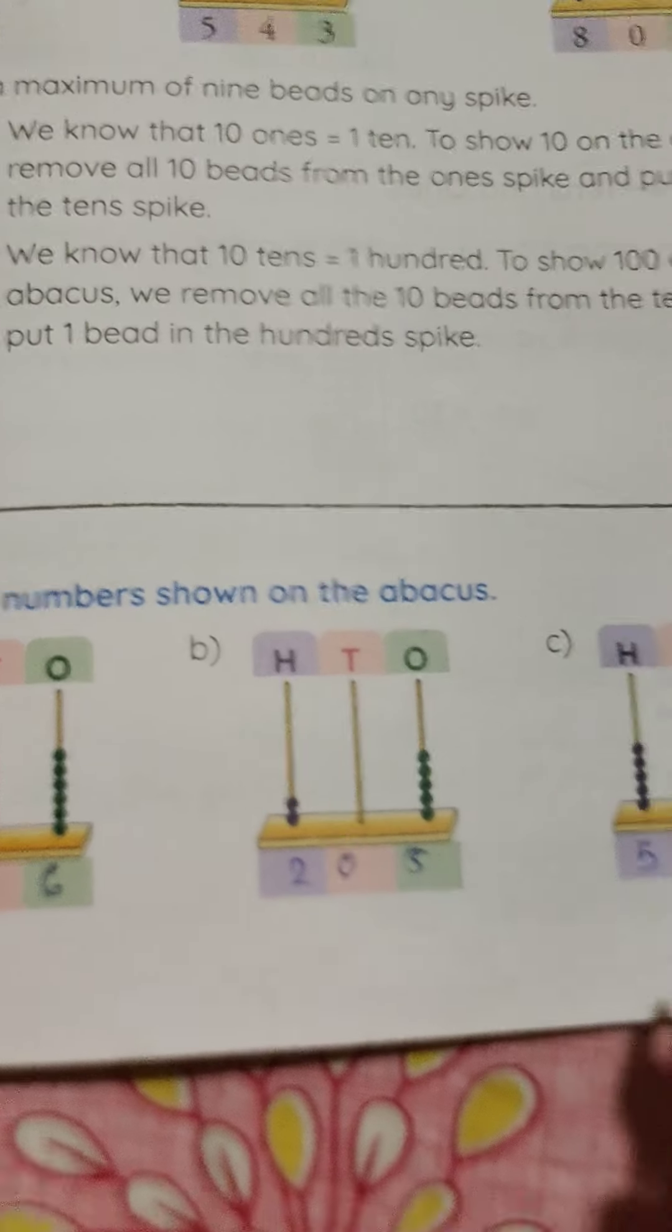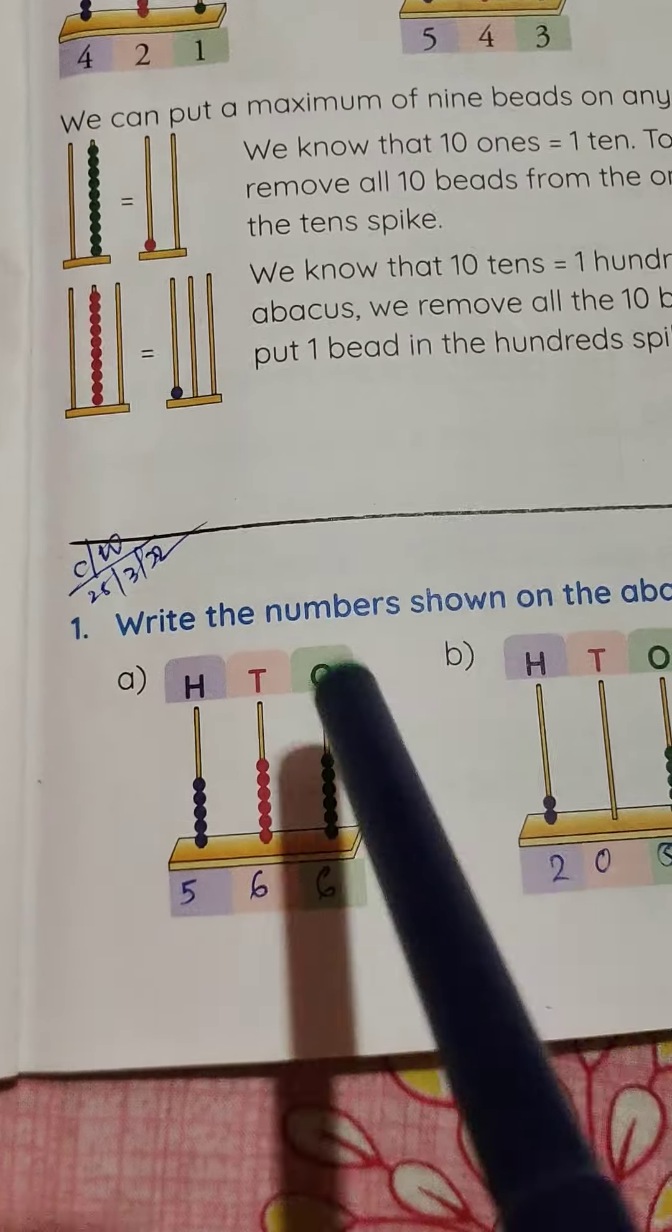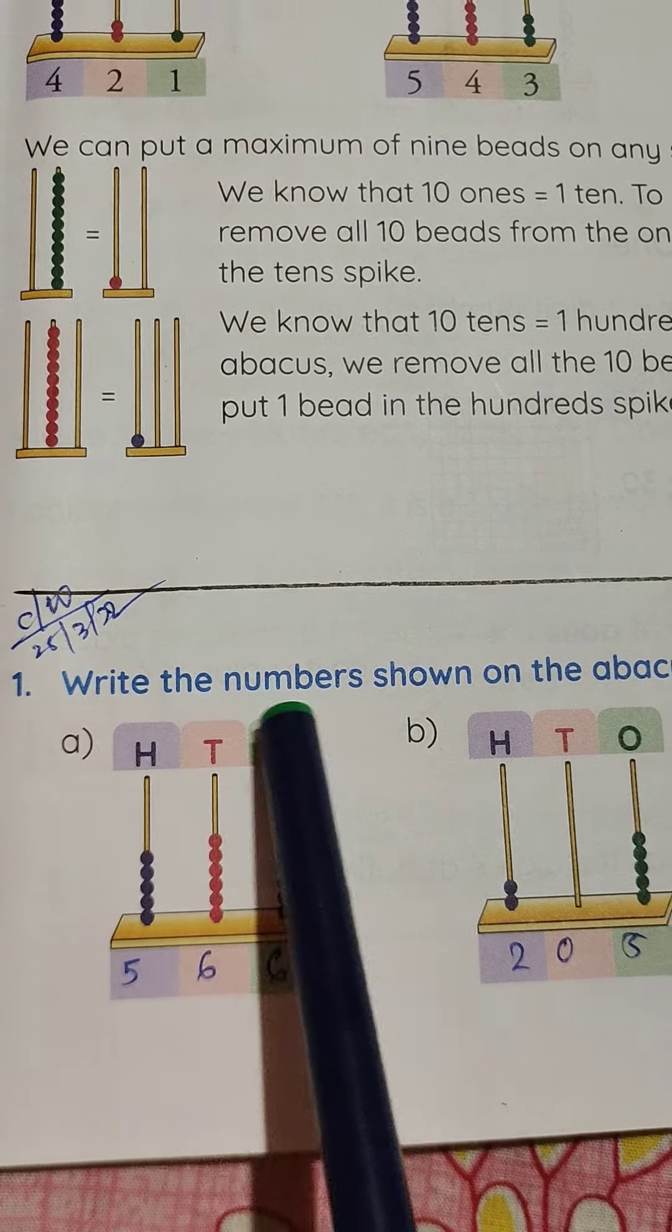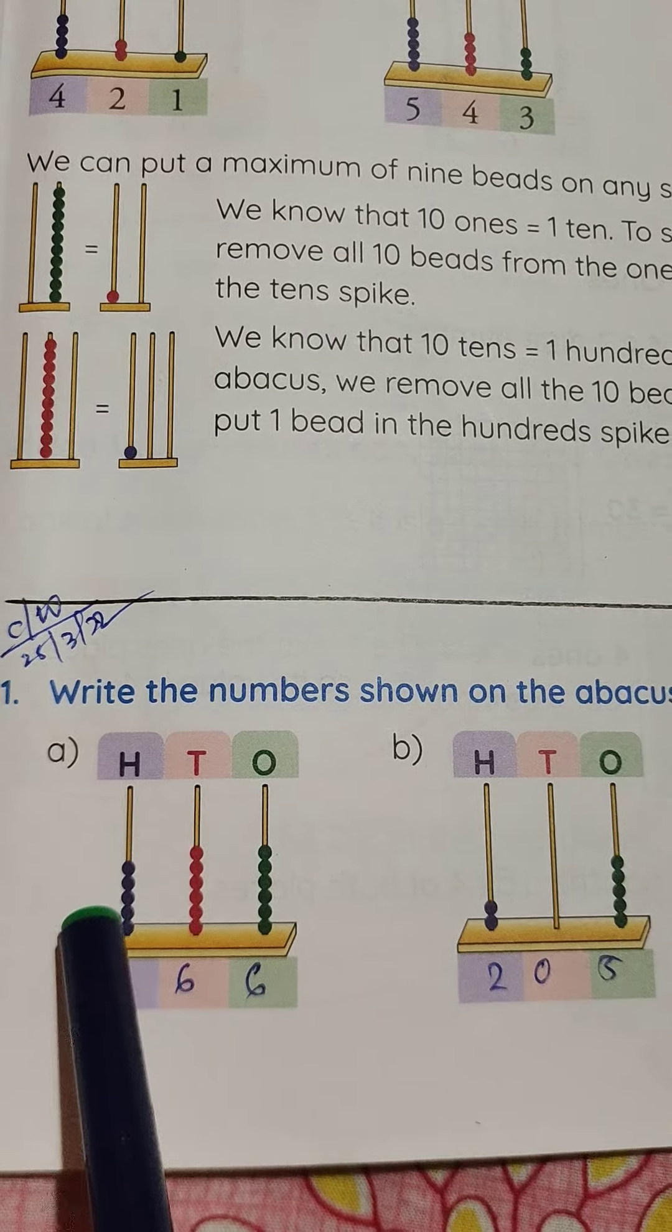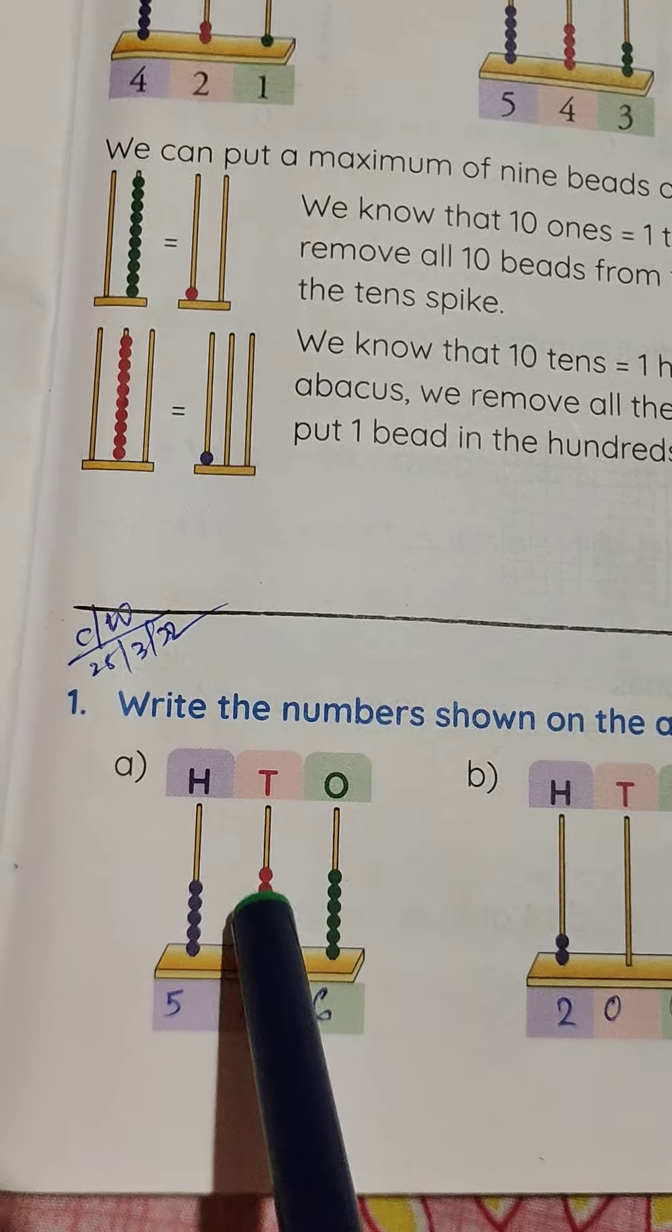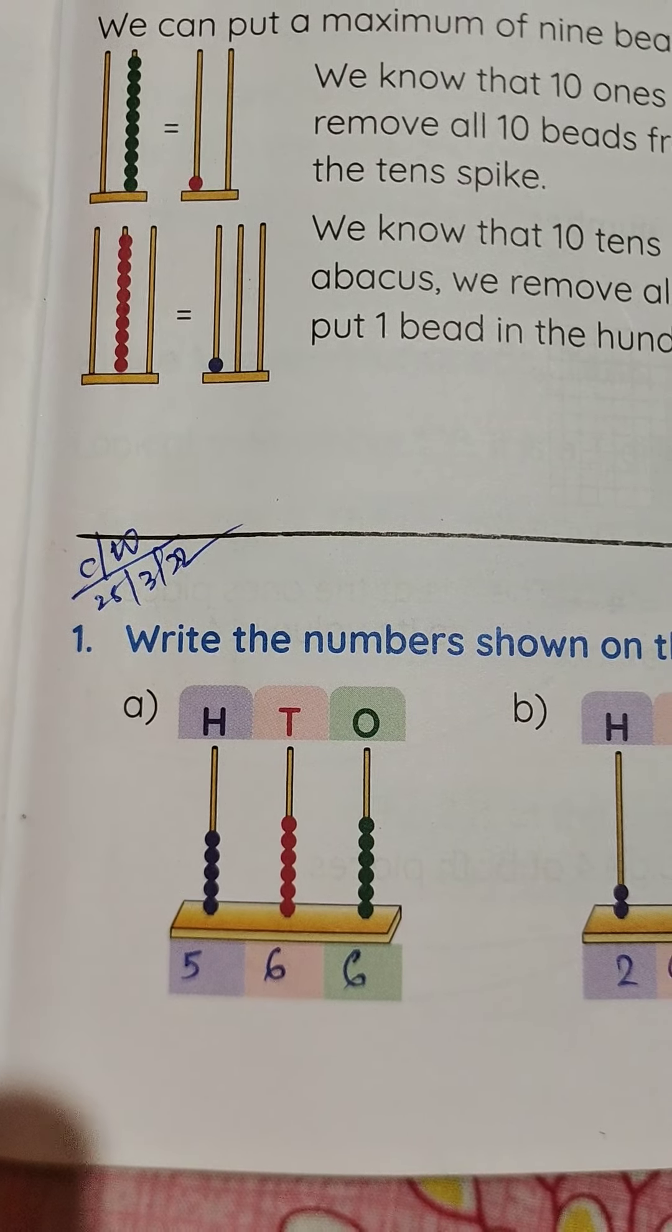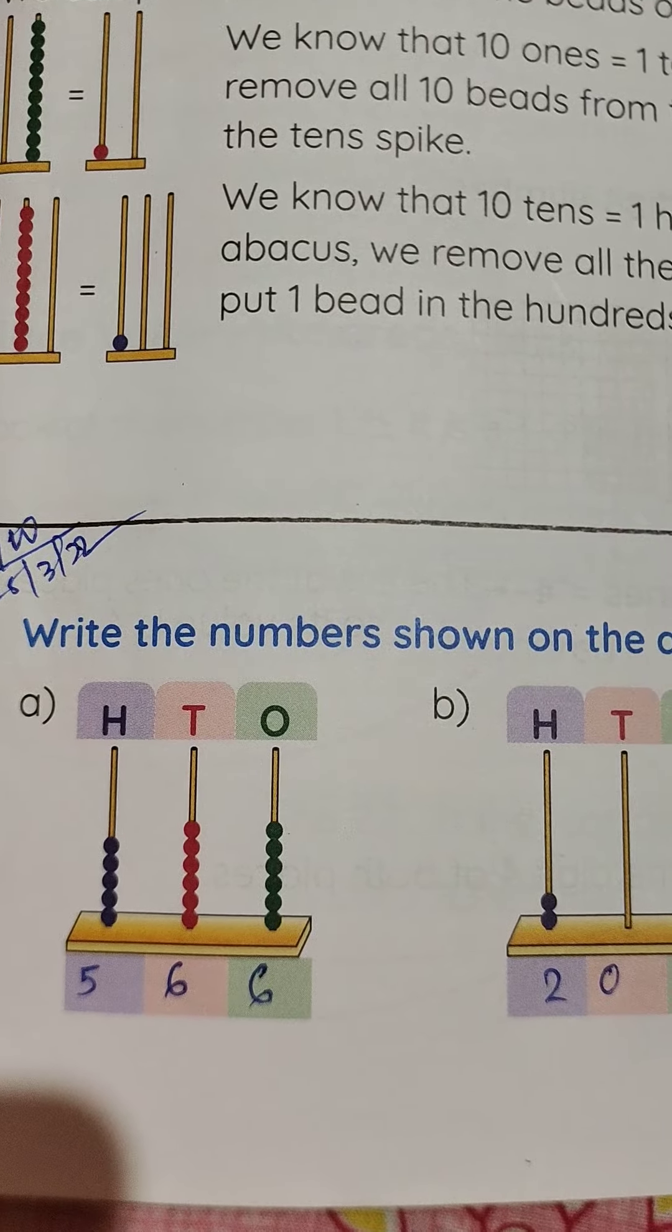Just open your math book to page number 55. This is the abacus. Write the number shown on the abacus. At first, you count the number of balls and then write the numbers. Here is 5 number of balls, so this is 5, then 6, then 6.